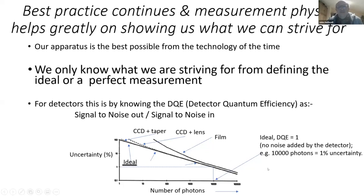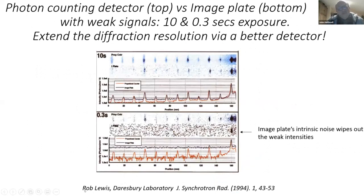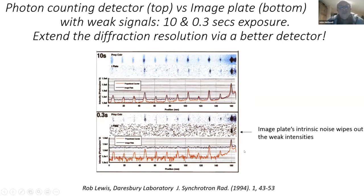As a practical example — done by Rob Lewis, head of the detector group at Daresbury — he compared the proportional chamber as a photon counter with image plates on a rat tail collagen diffraction pattern with a 10-second exposure time. The proportional chamber faithfully recorded the diffraction pattern; the image plate did OK. But reducing the exposure time by a further factor of 30, the photon counter still clearly showed the linear diffraction pattern, while the image plate noise swamped the signal.